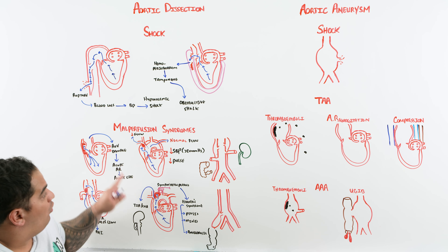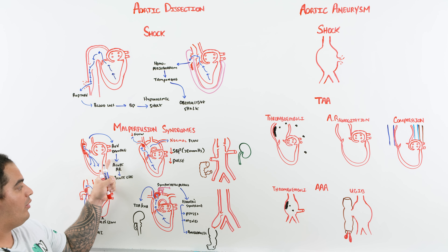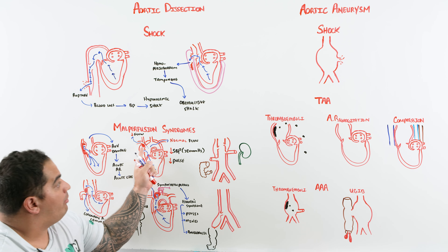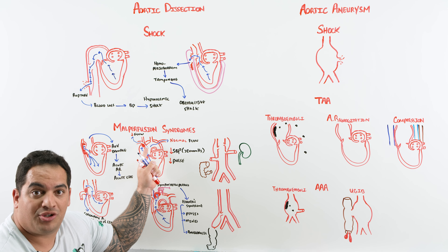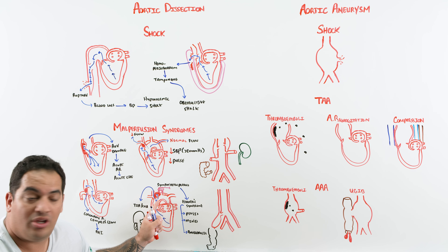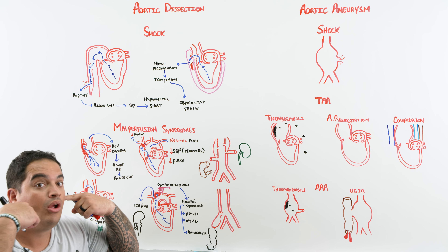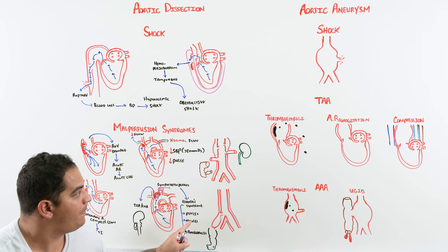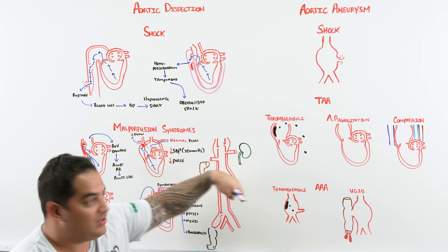To summarize ascending aortic dissection malperfusion: you can have aortic regurgitation, coronary artery compression causing MI, brachiocephalic compression causing asymmetric blood pressures and pulses, and common carotid compression causing TIA, CVA, or Horner's syndrome from sympathetic plexus compression.